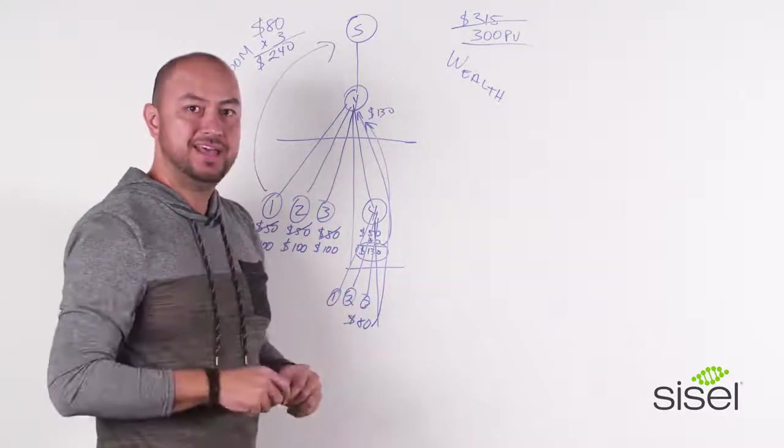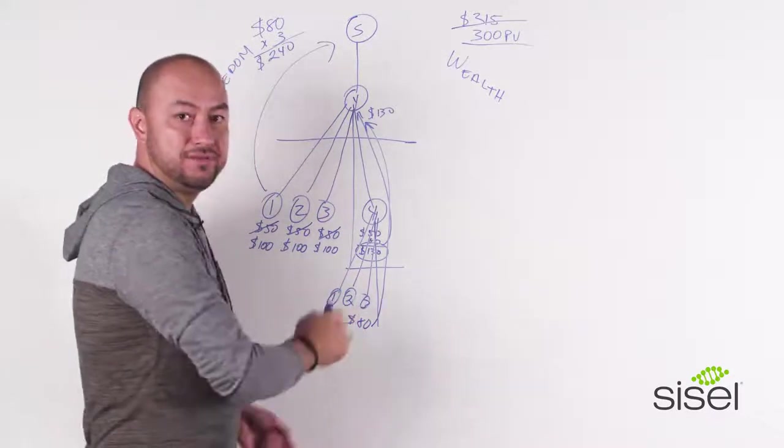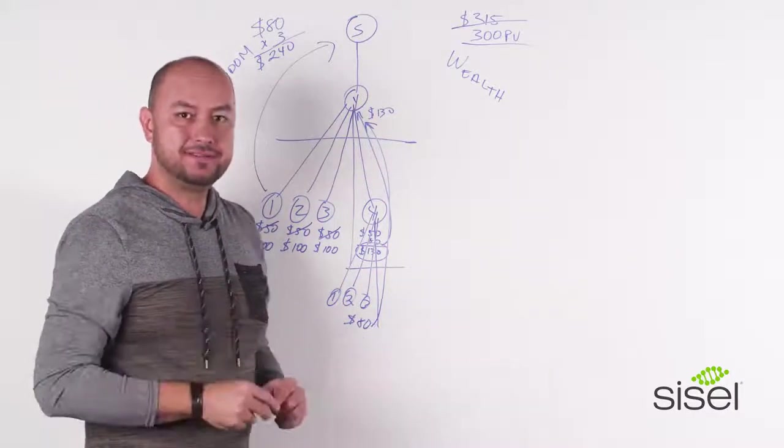Now, one of the things that I love to explain is that every time your first three's first three's first three, through infinity, you will always be getting the $80 regardless, through infinity.